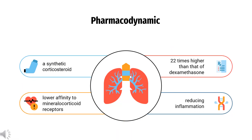How does Mometasone work? In asthma, Mometasone is believed to inhibit mast cells, eosinophils, basophils, and lymphocytes. There is also evidence of inhibition of histamine, leukotrienes, and cytokines.